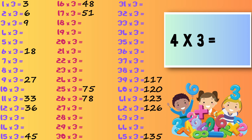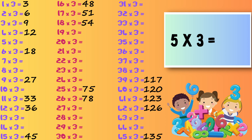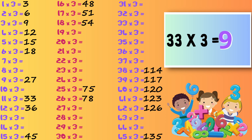Four times three — twelve. Eighteen times three — fifty-four. Five times three — fifteen. Thirty-eight times three — one hundred and fourteen. Thirty-three times three — ninety-nine.